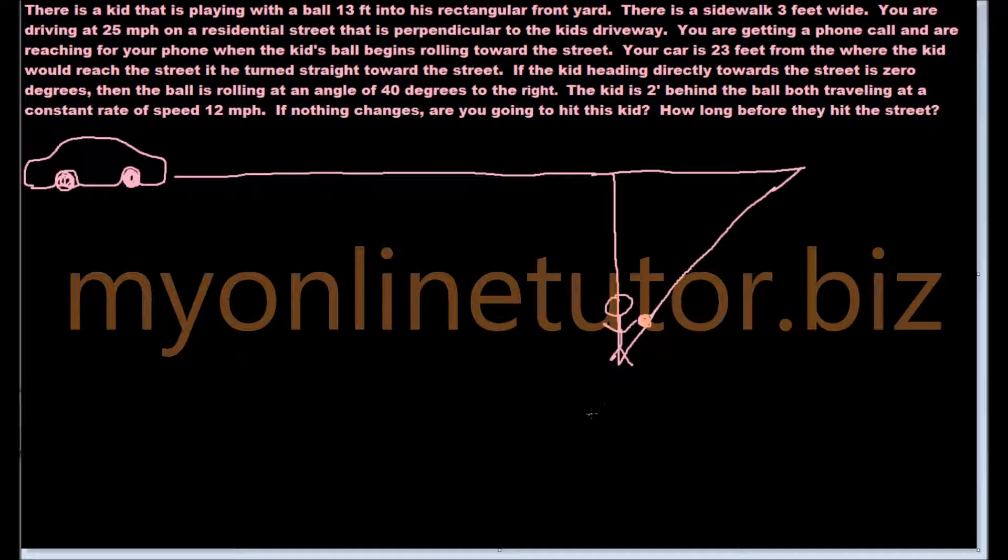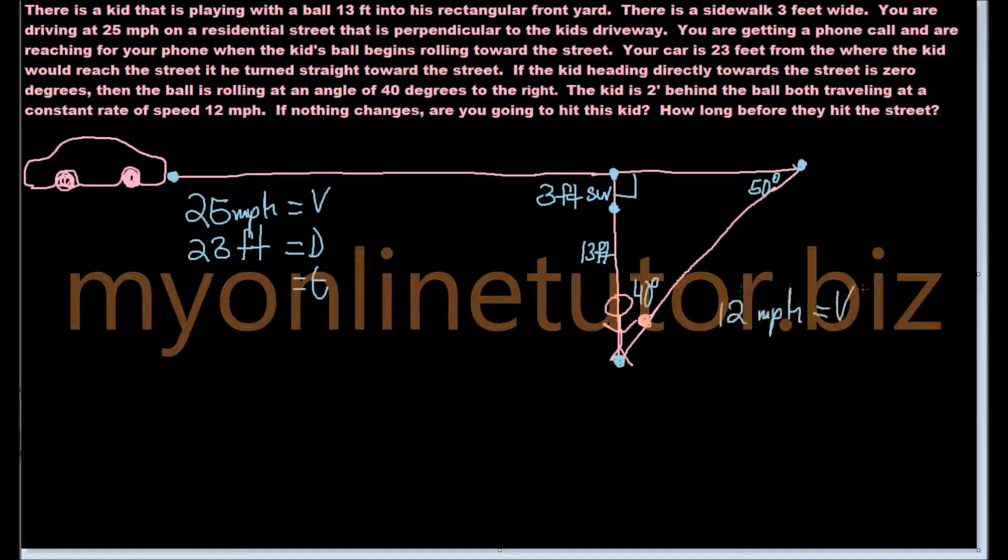Once that's done, then I need to go on and label my diagram, putting the information that I've been given from the problem into it. You've got the three-foot sidewalk, you've got the 13 feet deep, you've got the vehicle going 25 miles an hour and 23 feet from where the kid would hit the street if they went straight or directly towards it. If they can't catch that directly towards something means you're heading straight at it perpendicular, then just take a marker and demonstrate.